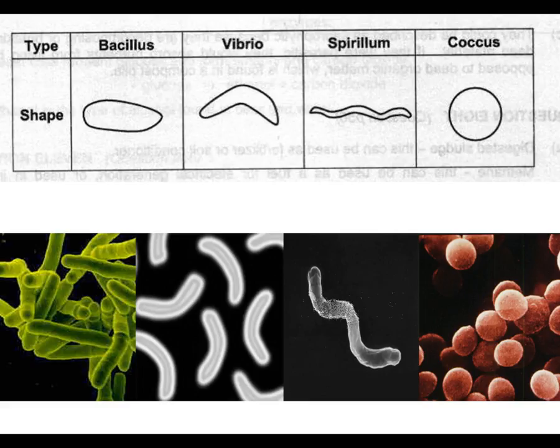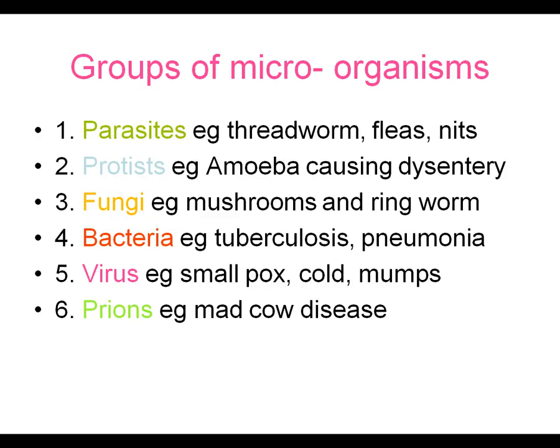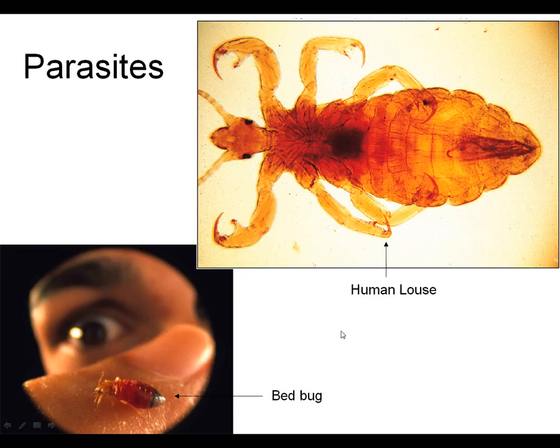Technically, there are some other things that are often considered or grouped under microorganisms too. Besides fungi, bacteria, and viruses, there are parasites, protists, and things called prions, which can also be considered microorganisms. So parasites — for instance, here you've got a human louse, and down here a bed bug. These are small insects that are one type of parasite that can infect the body. You may have had lice before, or nits as another name for them, which infect the hair.